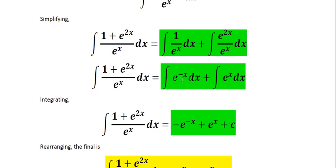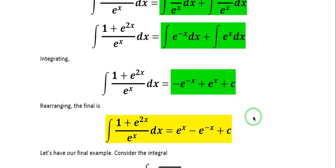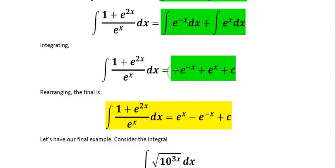For the first term, if we let u equal to negative x, then du is negative dx, which gives a correcting factor of negative one. Integrating gives negative e to the negative x plus e to the x plus C. Rearranging with the positive term first, the final answer is e to the x minus e to the negative x plus C.